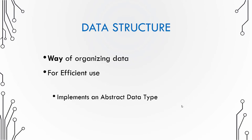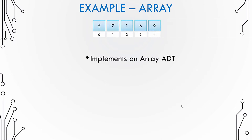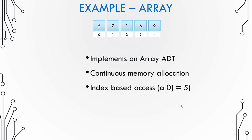Let us take a look at an example: the array data structure. If you have some programming experience, you already know what an array is. The array data structure implements the array abstract data type, which specifies that the array is a collection of objects and any object can be accessed randomly. To implement this, memory allocation is continuous — elements sit beside each other in memory. For random access, you provide index-based access.